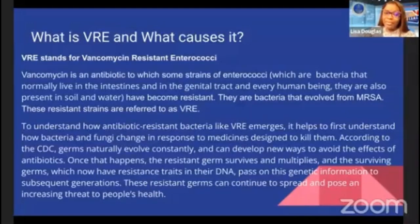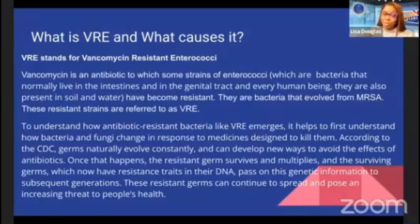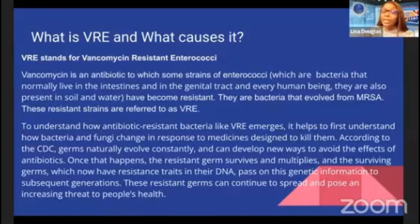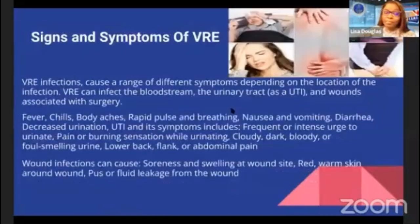Once that happens, the resistant germ survives and starts to multiply. The surviving germs, which now have resistant traits in their DNA, pass on this genetic information to subsequent generations. These resistant germs can continue to spread and pose an increasing threat to people's health.